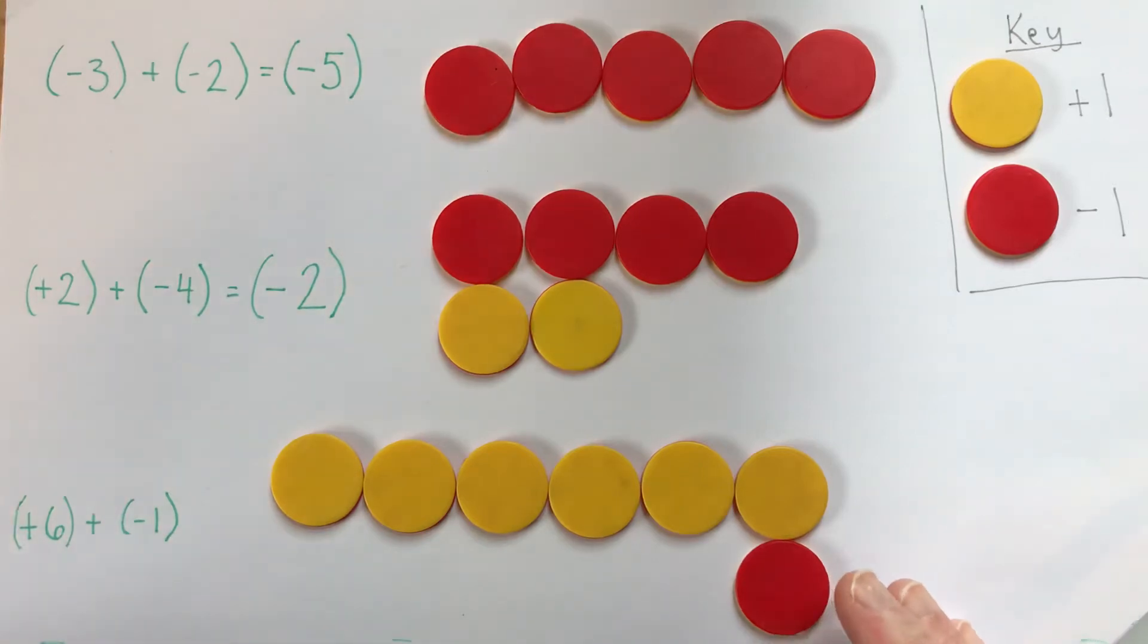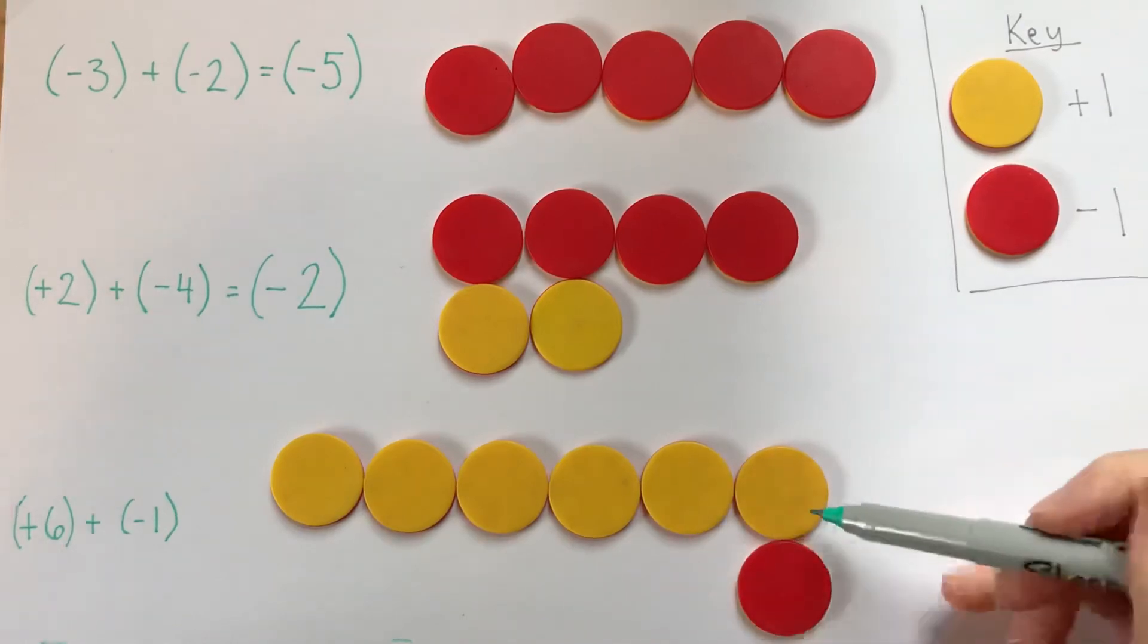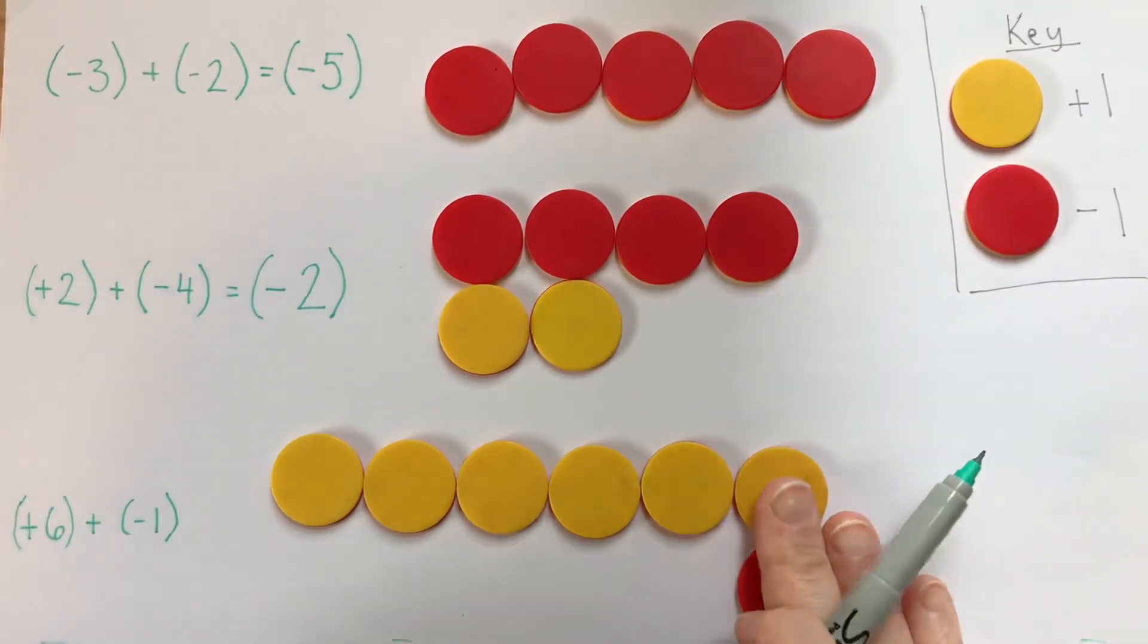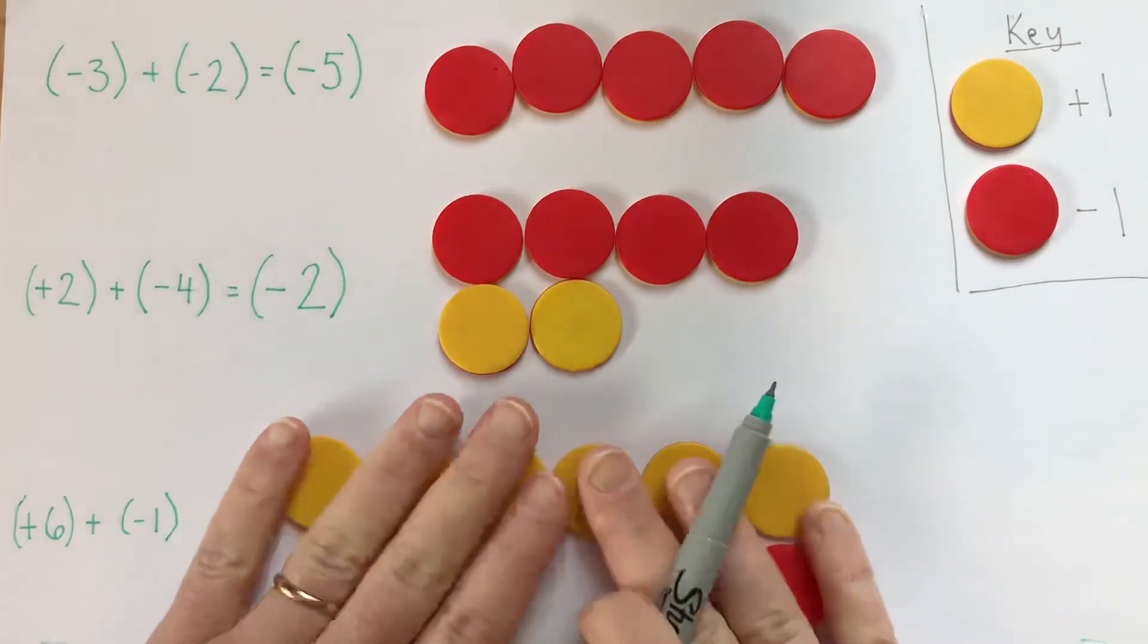The idea is just for it to be easy to read. This is worth zero, this yellow and this red together. So this number is worth one, two, three, four, five. This is positive five.